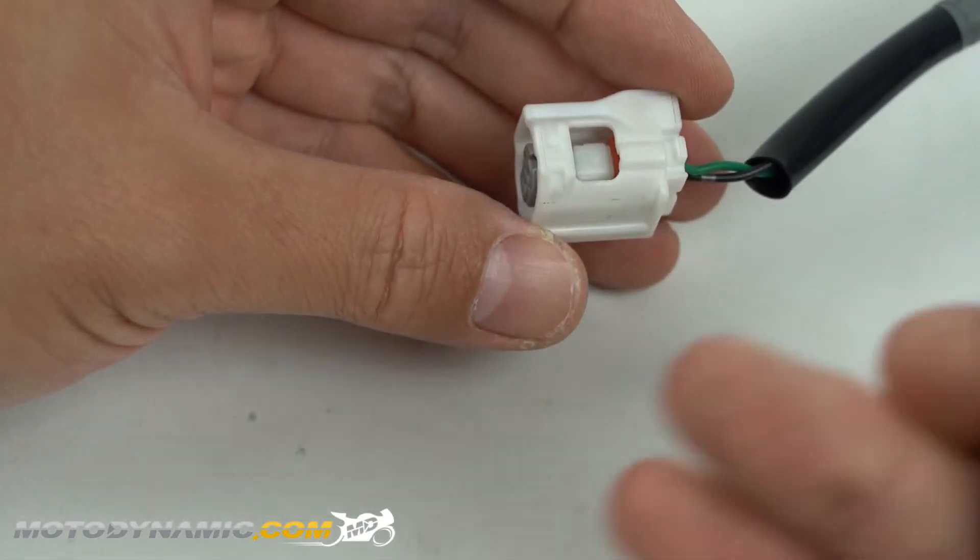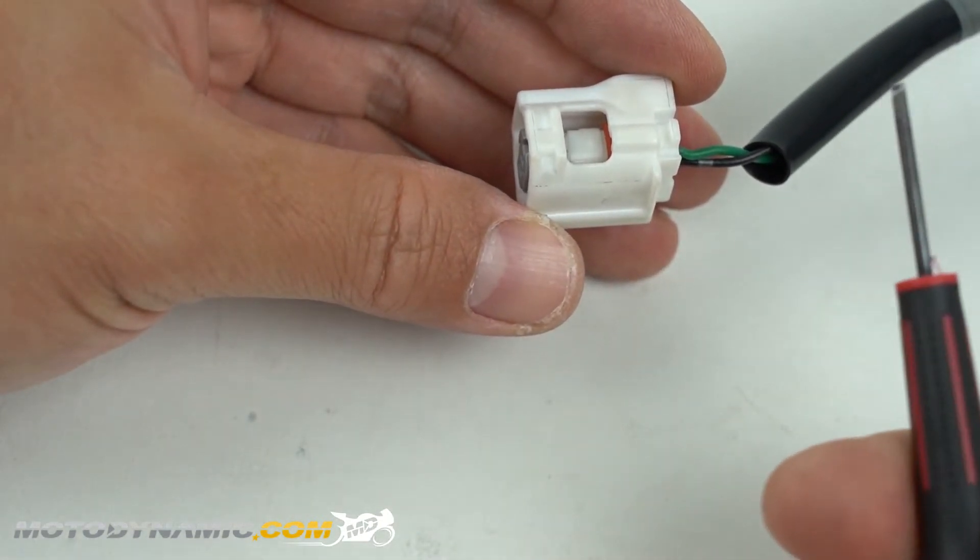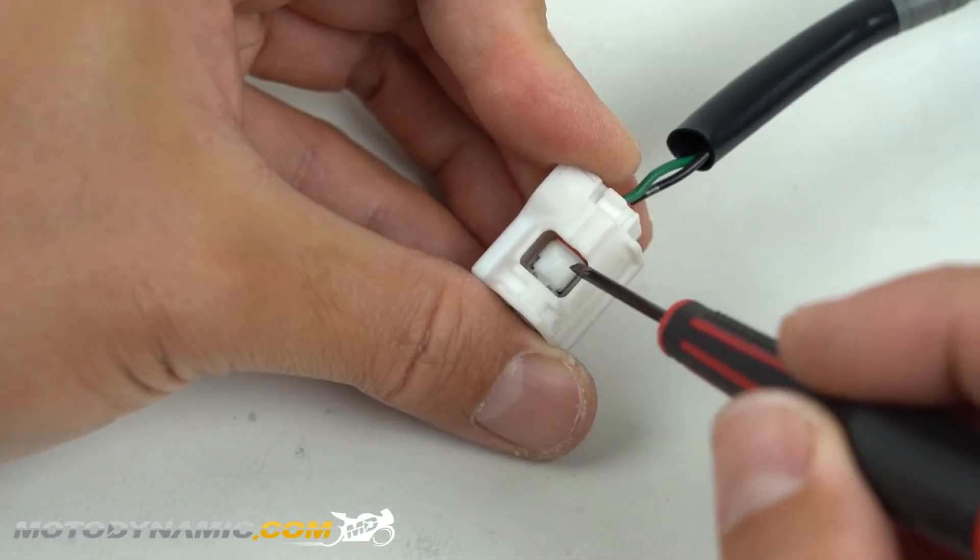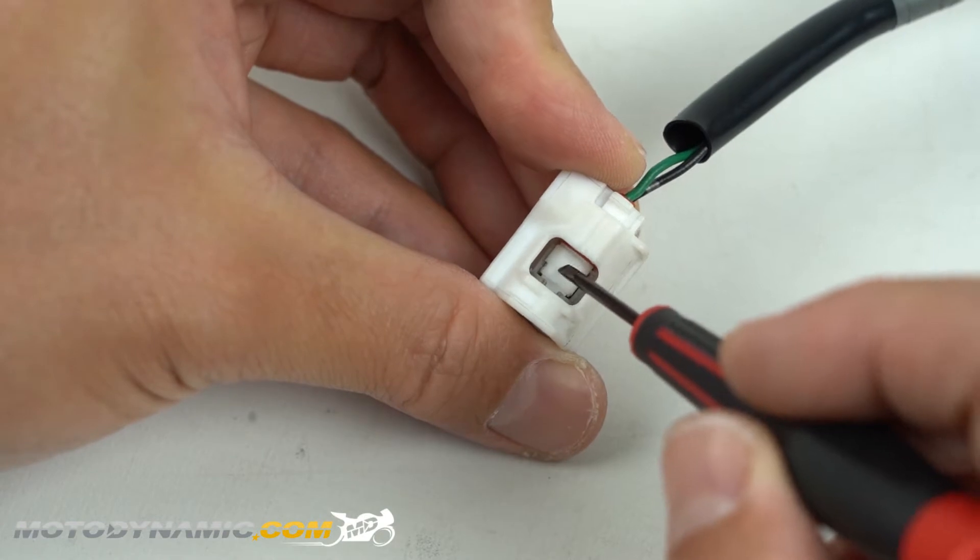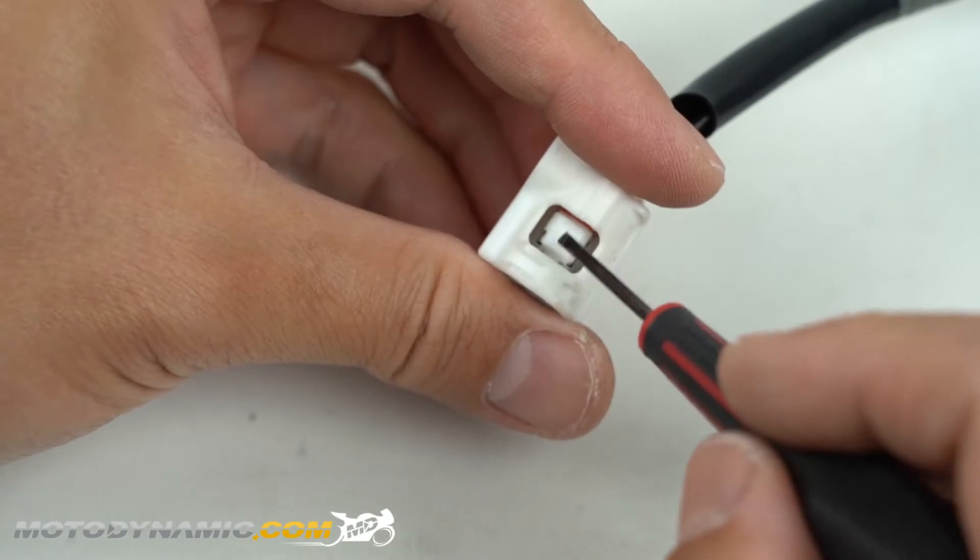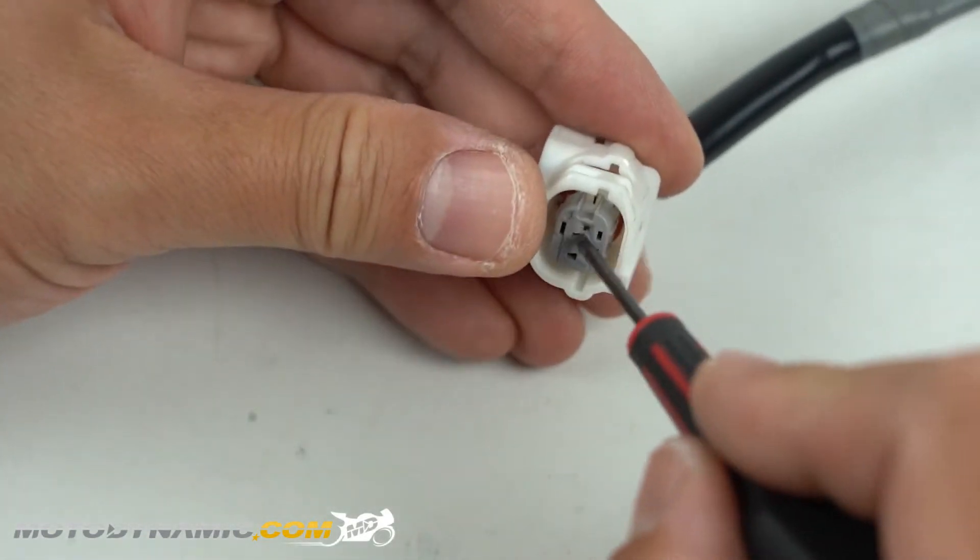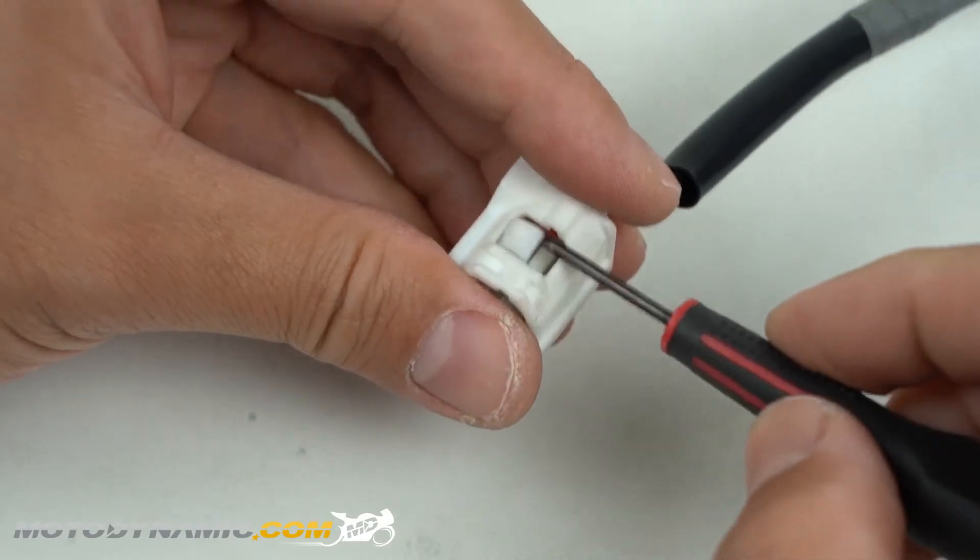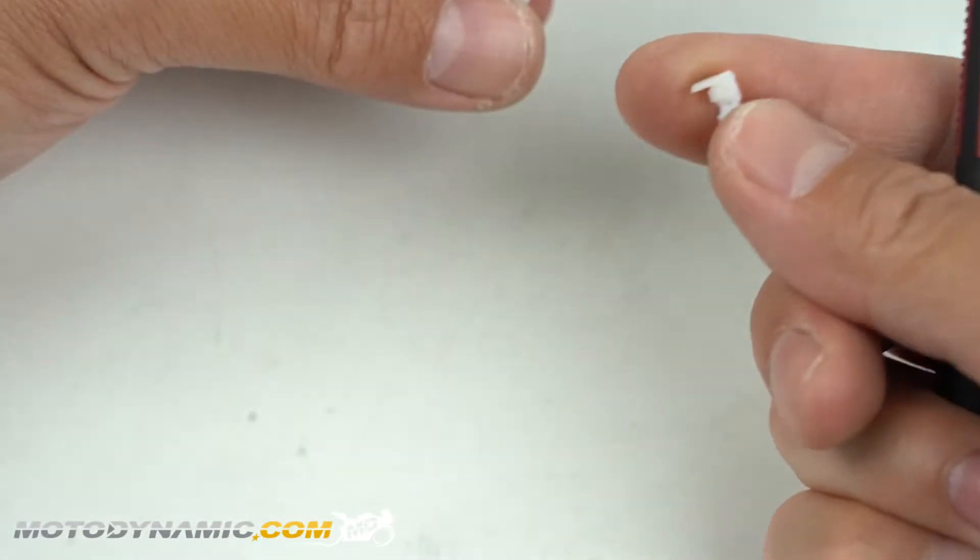First thing we're going to do is grab a standard small flat head screwdriver. We're going to be removing this small white locking tab right here. Go ahead and pry up on it. It should pop right up and we're going to want to completely remove that. Just get under there and pop it out.